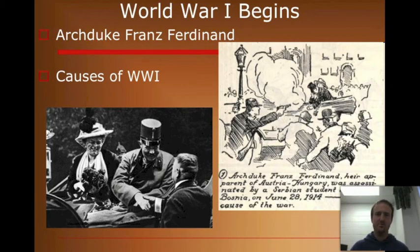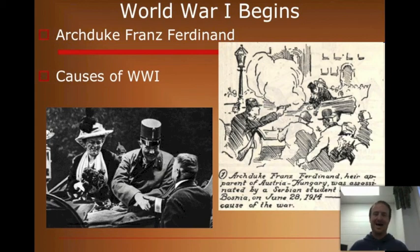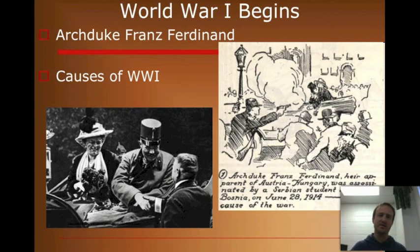One country comes to the defense of another country, and then another country comes to the defense of another country, and all of a sudden you have all these nations hopping into the war. That is what makes it such a big war — first known as the Great War, later known as World War I. As soon as that assassination takes place, you then have the causes of World War I set in motion.